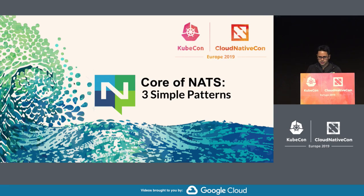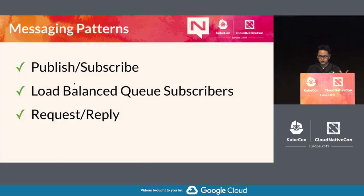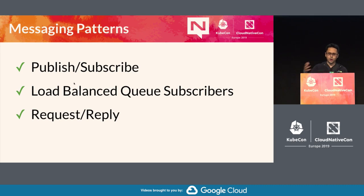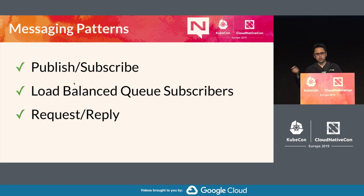At the core of NATS are three simple patterns. You can publish and subscribe — essentially one-to-many communication. There's built-in support for load balancing, so you can create queue subscriptions that randomly load-balance requests one-to-one. And of course you have request-reply, which is built on top of pure publish-subscribe, using ephemeral subscriptions with limited interest that announces the number of subscribers, and you get the response with the lowest latency.